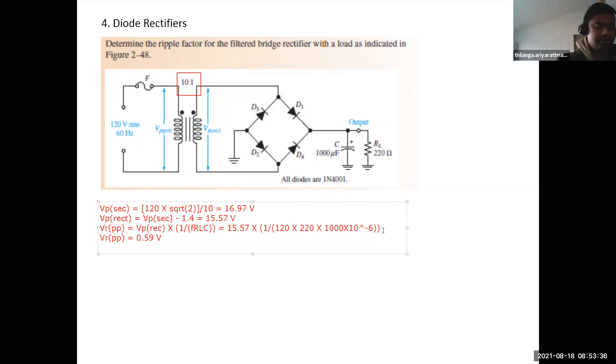Now, what will be the DC voltage, the DC, what it should be guys? V p rect minus half of the ripple voltage, right? That is what I explained earlier. Peak to peak ripple, so that mean half of this one. V p rectified voltage, that is 15.57 minus 0.59 divided by two. So what will be the answer here? VDC.